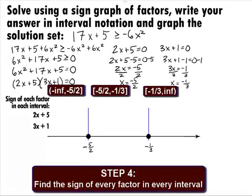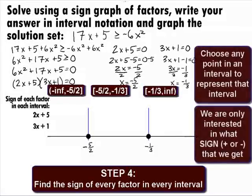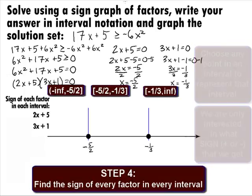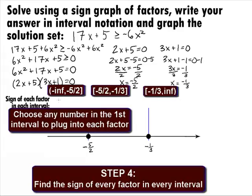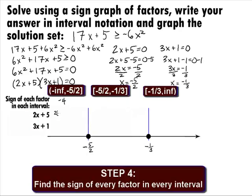In Step 4, we need to find the sign of every factor in every interval. We can choose any point in an interval to represent that interval, plug it into each factor, and determine if the sign is positive or negative. Choosing negative 4 from the first interval of negative infinity to negative 5 halves: 2 times negative 4 plus 5 equals negative 3, so that factor is negative. Plugging negative 4 into the other factor: 3 times negative 4 plus 1 equals negative 11, so we have another negative factor in that interval.